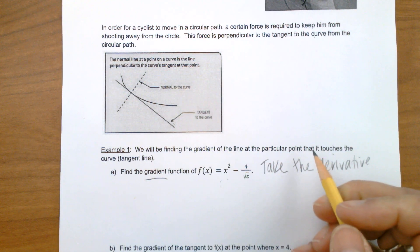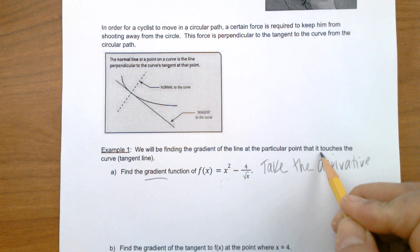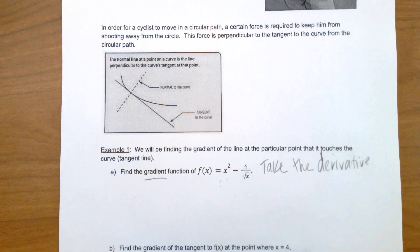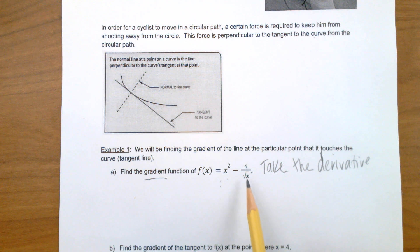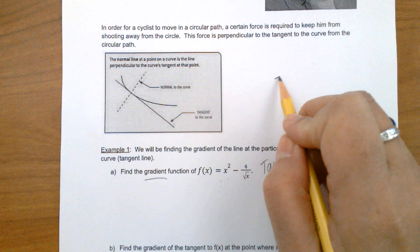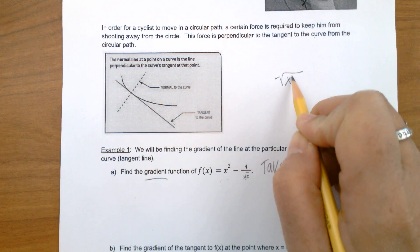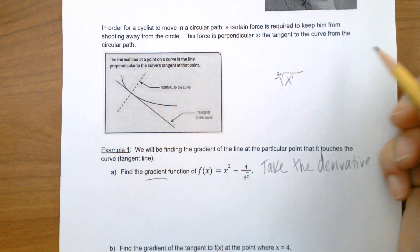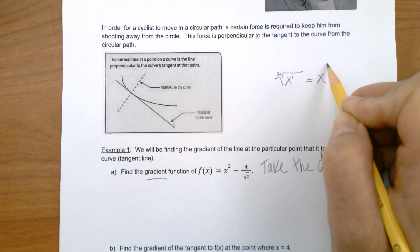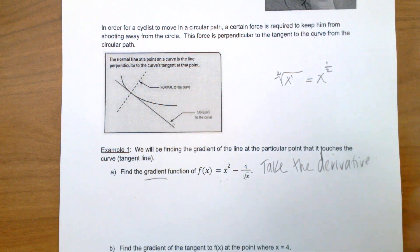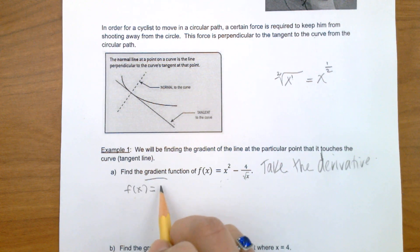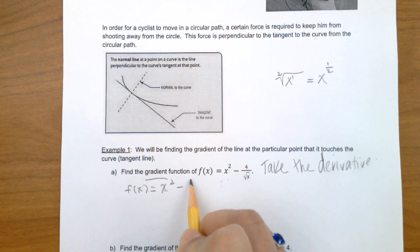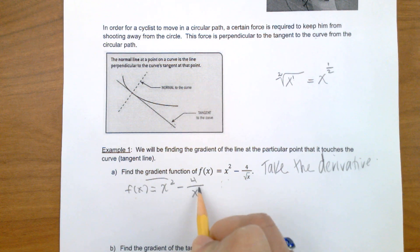Before we can take the derivative — and if you want to watch my video about taking derivatives, you can go back, I have one on it — we need to get this square root of x. The square root symbol we need to get rid of and get it out of the denominator. When we get rid of a square root symbol, we have to locate the exponent, which is 1, and the root, which is a square root, so that's 2. So this is going to become x to the 1 half. So let's rewrite that: f of x equals x squared minus 4 over x to the 1 half.